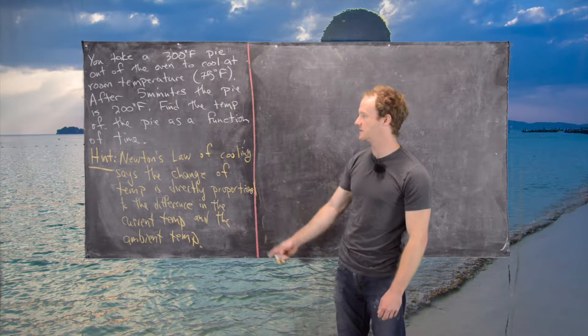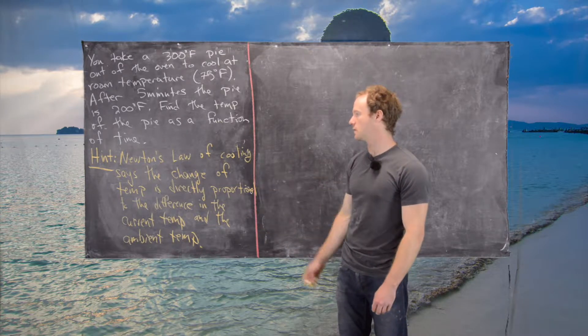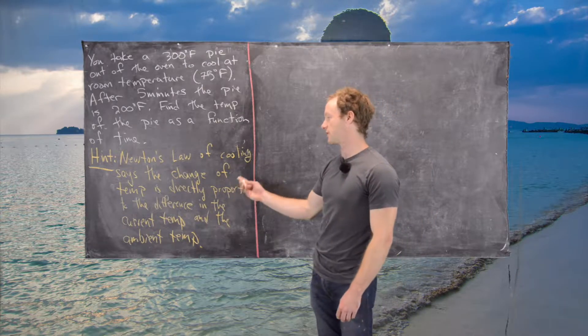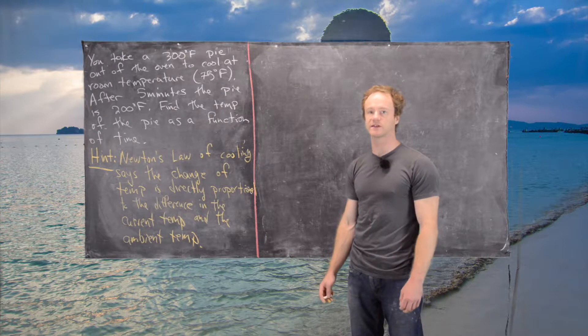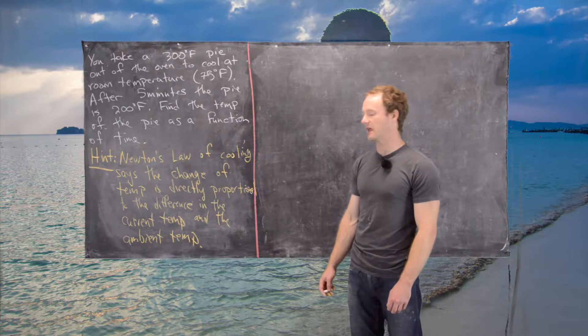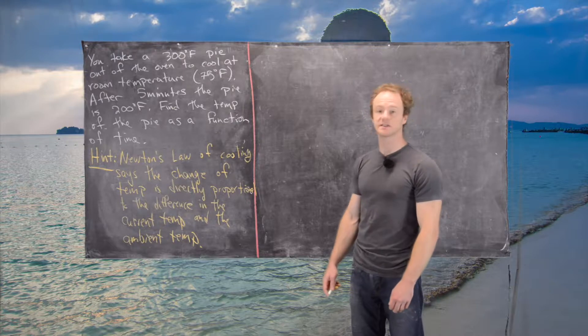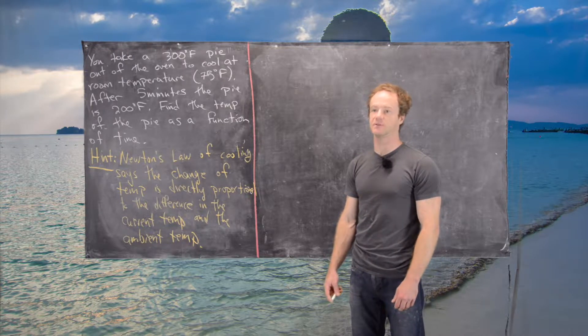Now here's a hint: Newton's law of cooling says that the change of the temperature of an object is directly proportional to the difference in the current temperature of that object and the ambient temperature. This tells us how to write down a differential equation immediately.